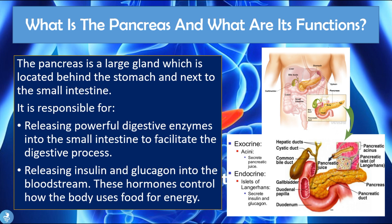These enzymes that the pancreas releases facilitate the digestive process — the breaking down of fats, proteins, etc. — and without them the food we ingest won't be able to digest properly. The pancreas is also responsible for releasing insulin and glucagon into the bloodstream, and these hormones control how the body uses food for energy.